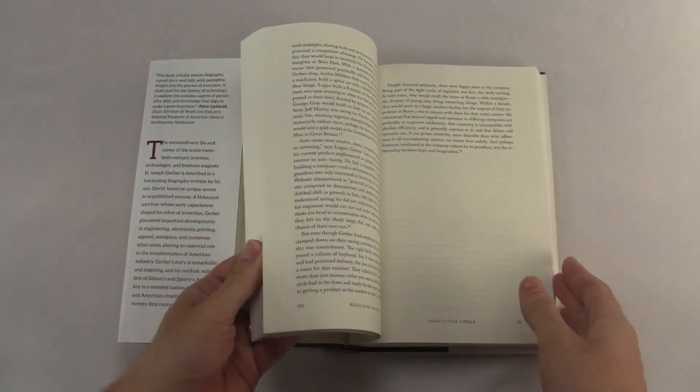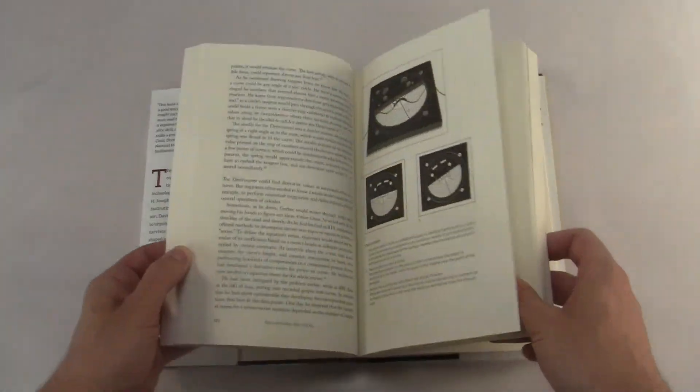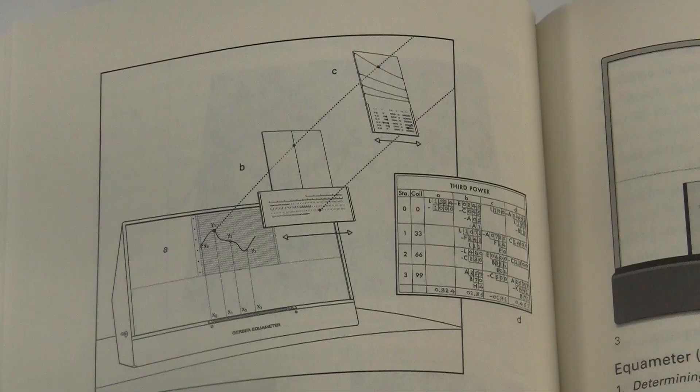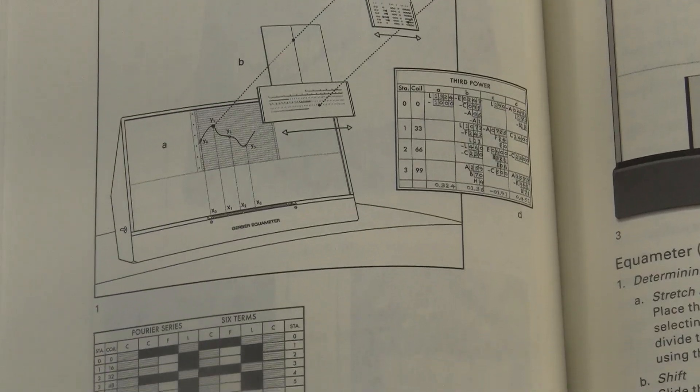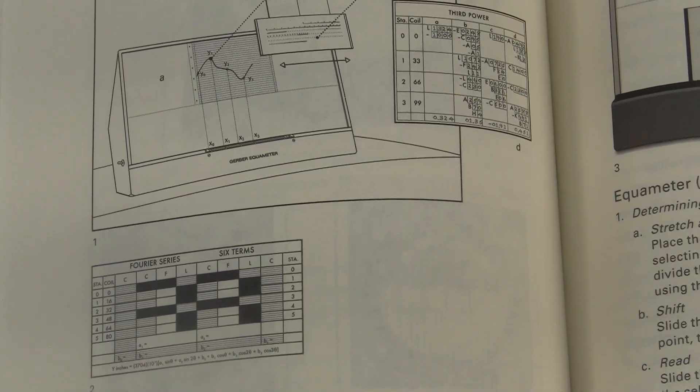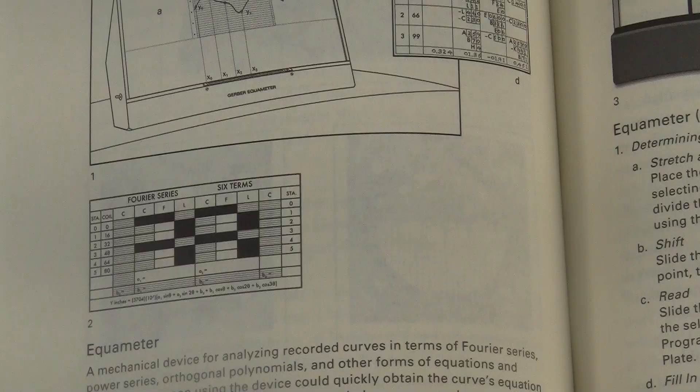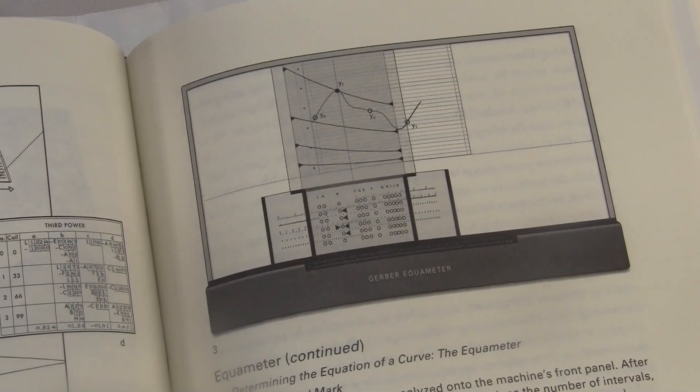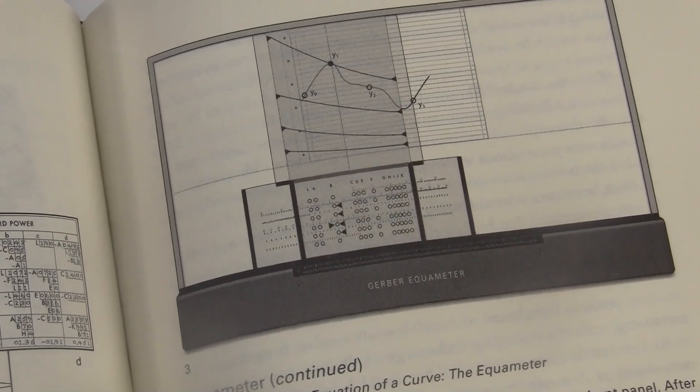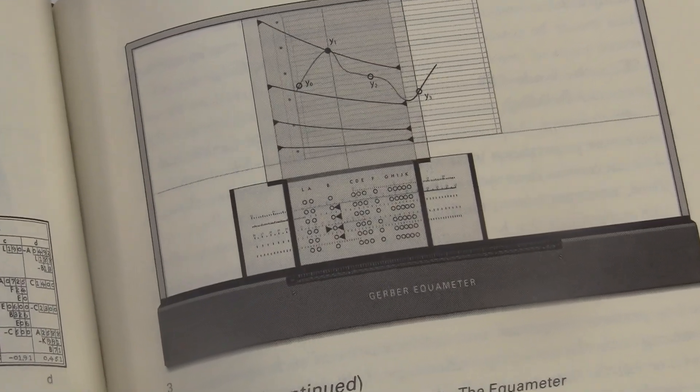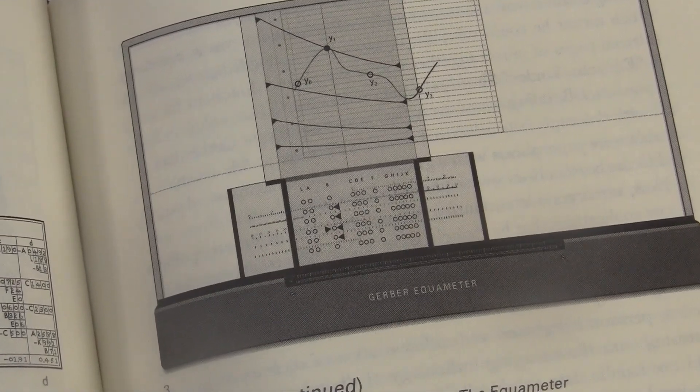When I read the book, I discovered an invention that I didn't even know existed. The Equimeter. Mathematically speaking, this is much more ambitious than his other graphical instruments. It doesn't just measure individual features of the curve, like the variable scale.